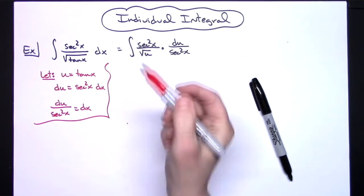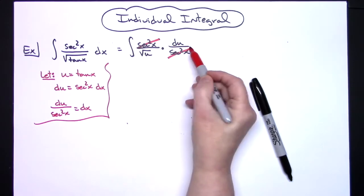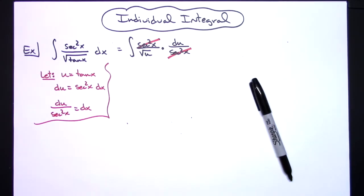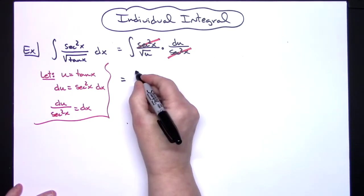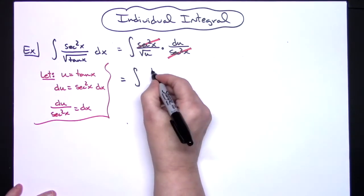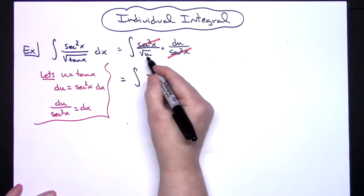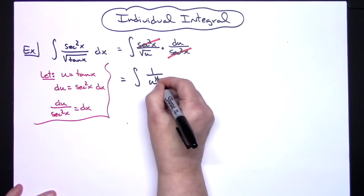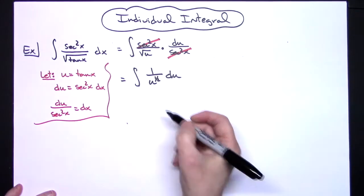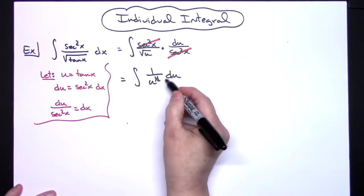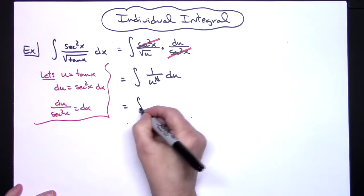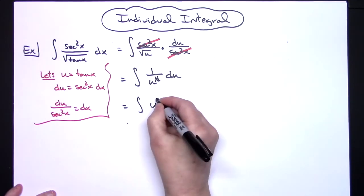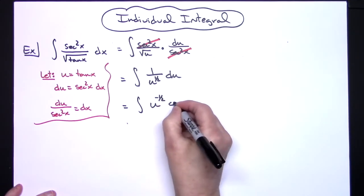What that's going to allow us to do is cross off those secant squared x's. Then we'll have an integral all in terms of u. We'll take that u and write it to the one-half power. Laws of exponents will allow us to bring this to the numerator so we'll be integrating u raised to the negative one-half du.